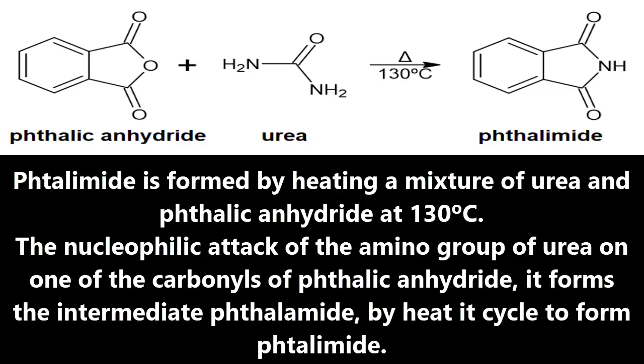The nucleophilic attack of the amino group of urea on one of the carbonyls of phthalic anhydride forms the intermediate phthalamic acid. By heat it cycles to form phthalamide.